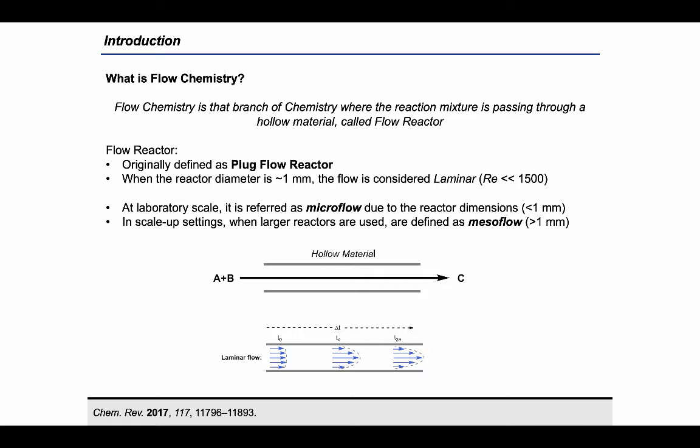On the other hand, when the reactor dimensions exceed the millimeter, these systems are called meso flow reactors. In this case, the reaction mixture does not proceed with a laminar regime; instead small vortices are generated and it is idealized as turbulent flow.